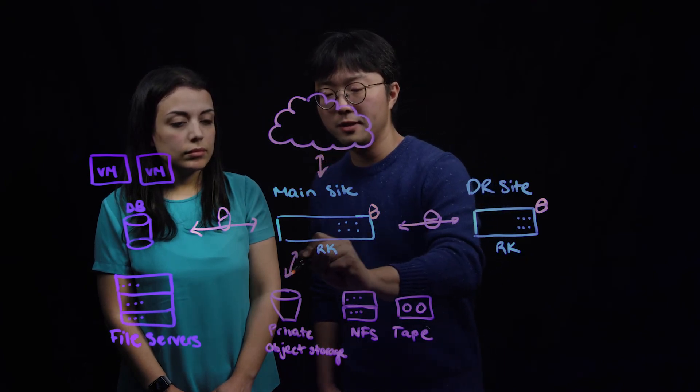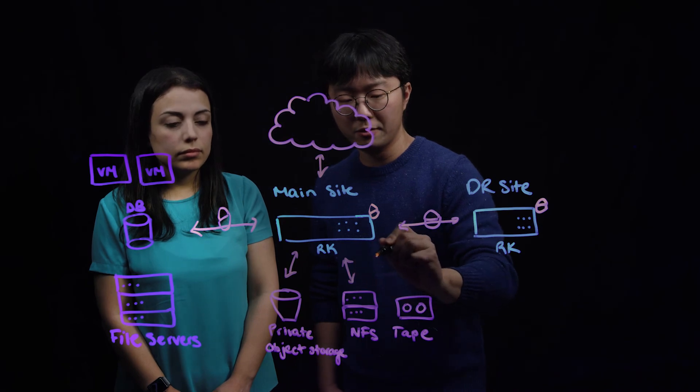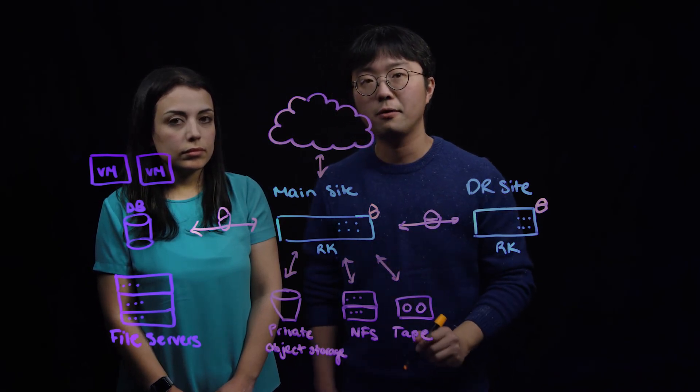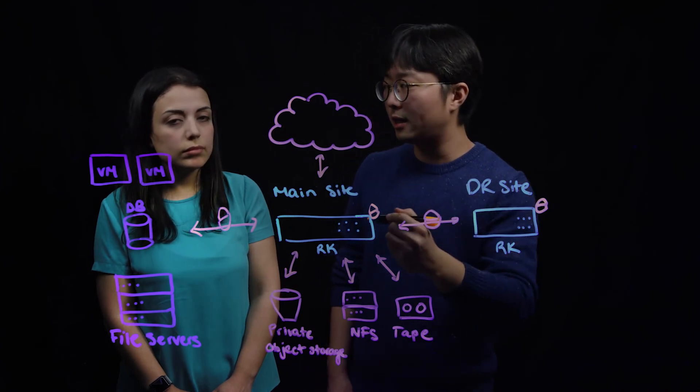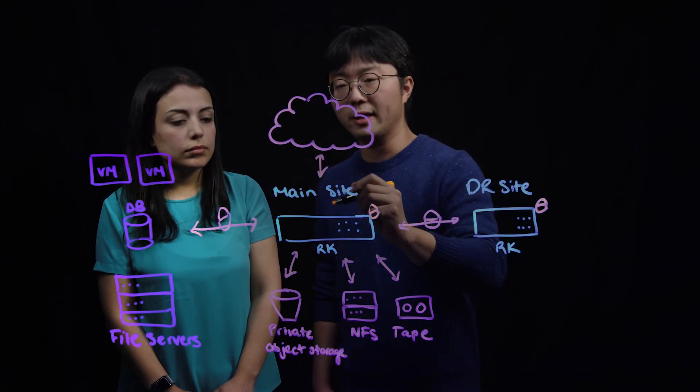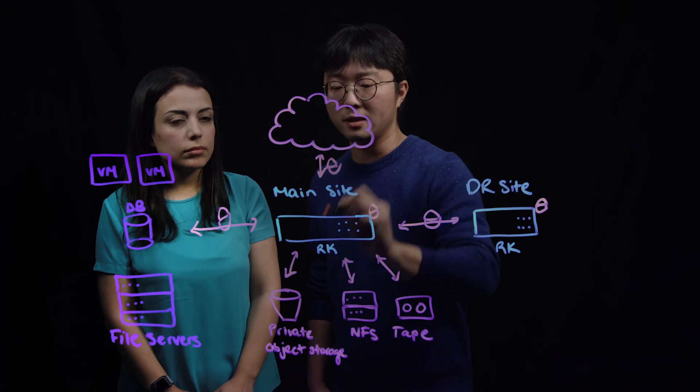Rubrik ensures everything is encrypted. It's going through encrypted channel. And furthermore, data is encrypted before the data leaves the appliance and reaching those archiving data sites.